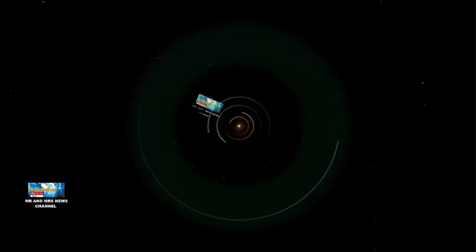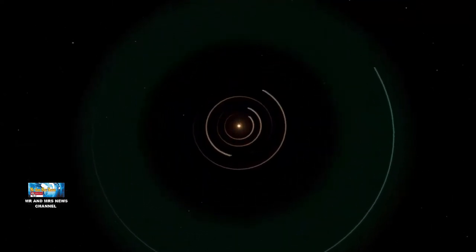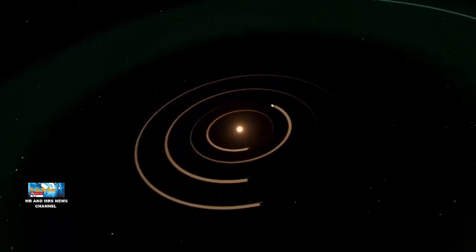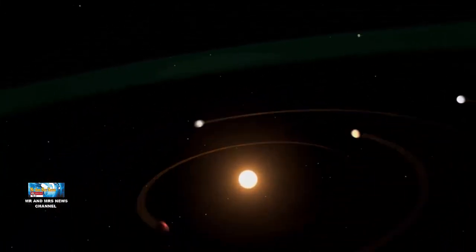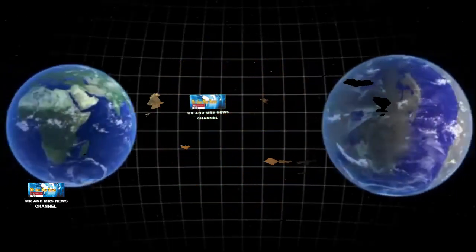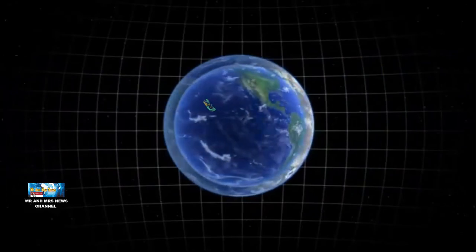Jika Kepler-186F mengitari matahari, ia akan melakukan perjalanan dalam orbit planet Merkurius. Karena Kepler-186F adalah bintang katai merah yang relatif dingin, planet ini masih berada di zona layak huni bintang tersebut. Kecerahan bintang pada siang hari di permukaan planet ini sebanding dengan sinar matahari saat 1 jam sebelum terbenam di bumi.